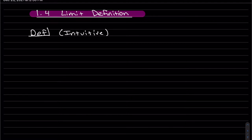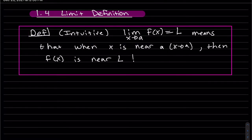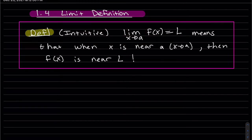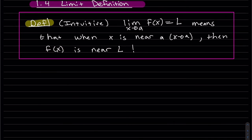To start off with our definition, this is just an intuitive definition, not the formal definition of a limit. We have the limit as x approaches a of f(x) is equal to L. What that means, when x is near a, the y value is near the limit. And just a note, f(a) does not have to exist for the limit to exist.